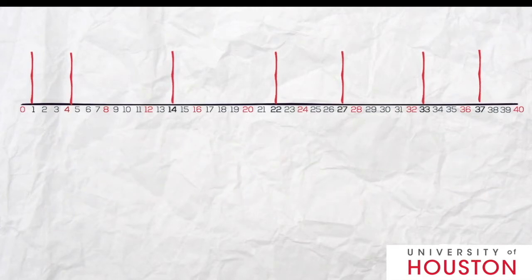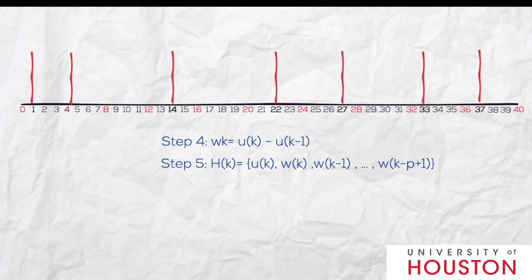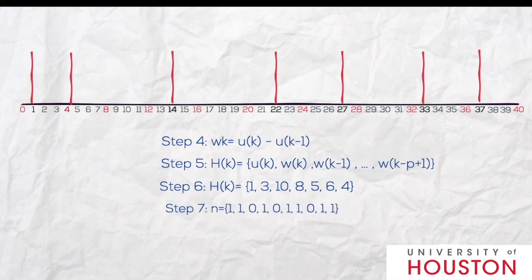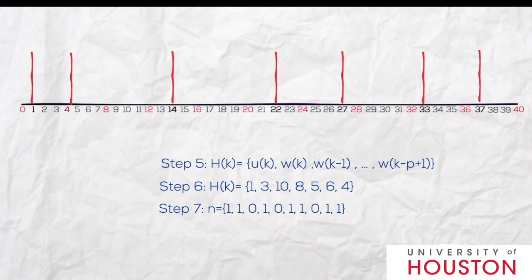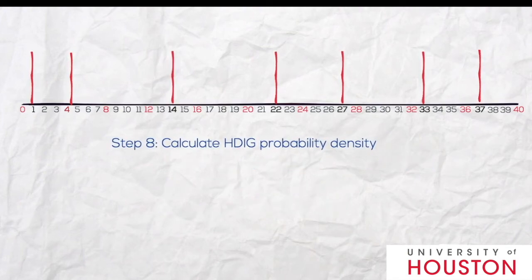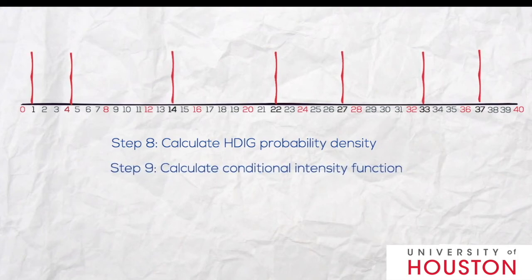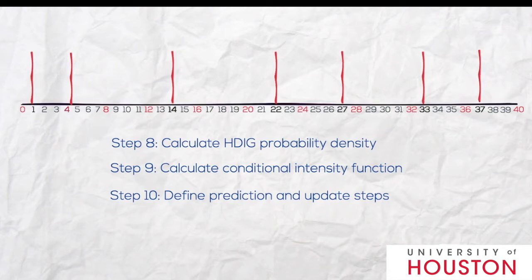We calculate WK, which is UK minus UK minus 1. Then HK is defined as (UK, WK to WK minus P plus 1). In this example, the HK values are 1, 3, 10, 8, 5, 6. N indicates whether there is a spike or not. We then calculate the history-dependent inverse Gaussian probability density function, the conditional intensity function, and based on these define the prediction and update steps. Finally, we calculate the mean RR interval of the signal.